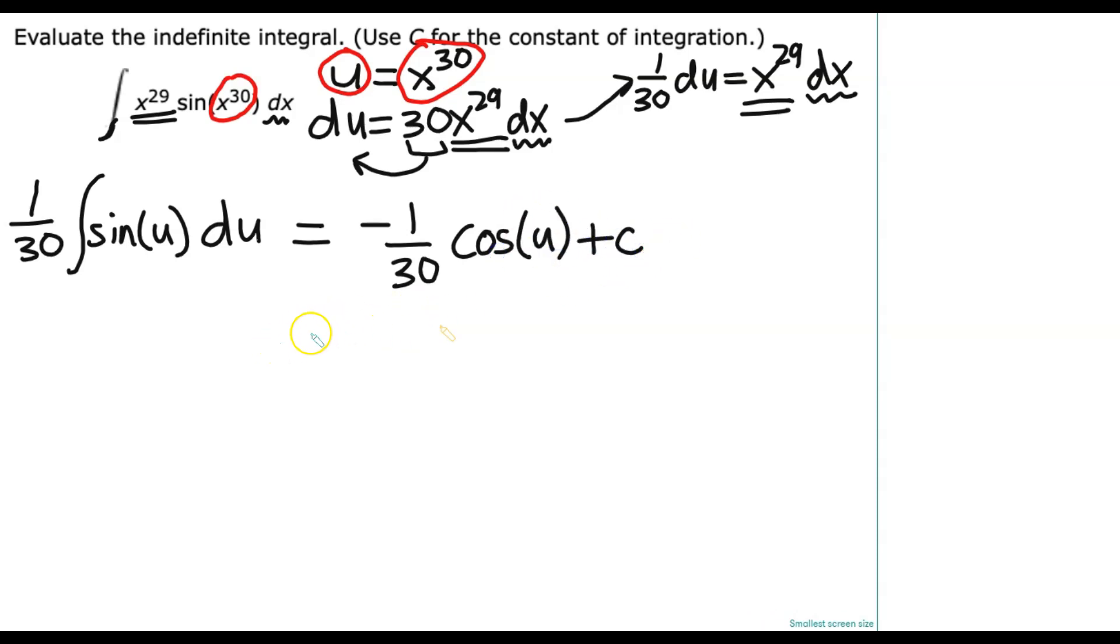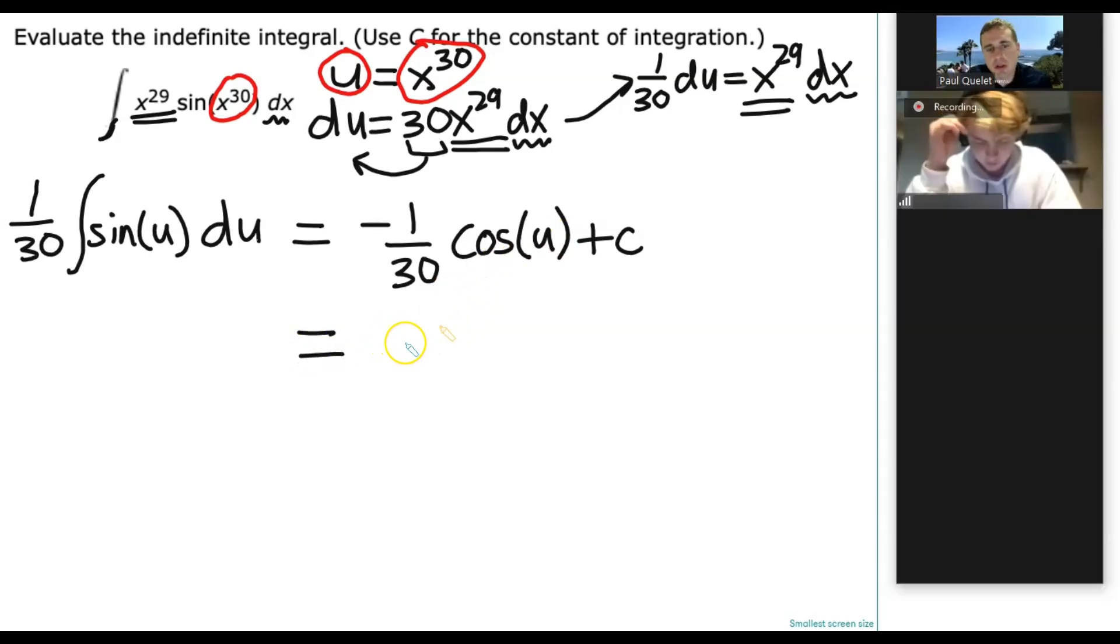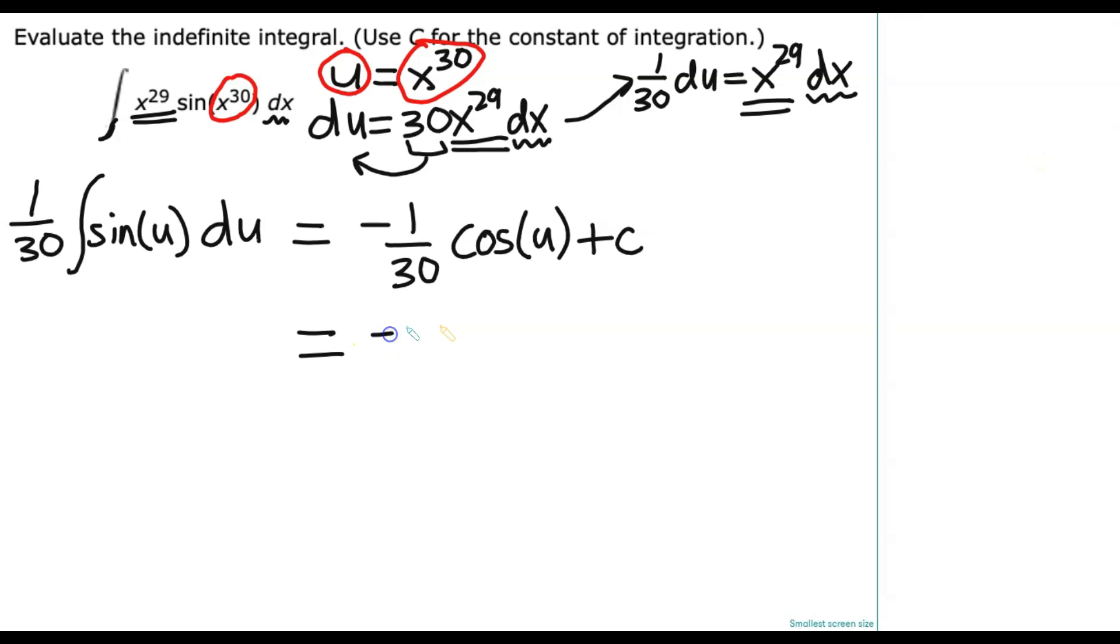And then we've only got one more step. And what do we now do to finish out the problem? We do. Yeah. So, we want our native variables, so to say, right? So, yeah, x to the 30th. How does that feel after we walk through?